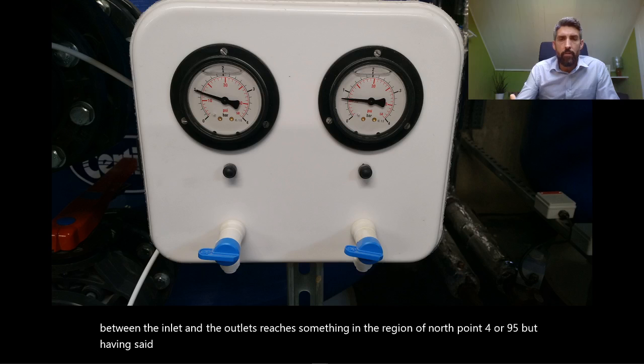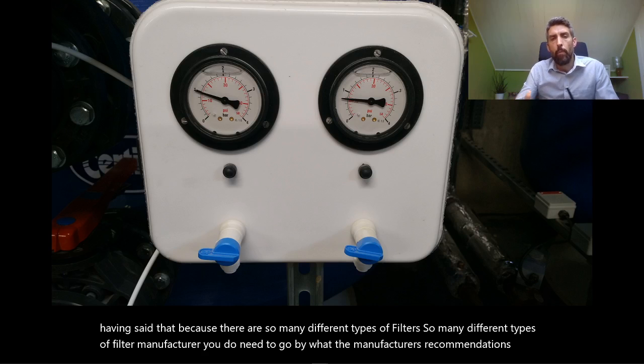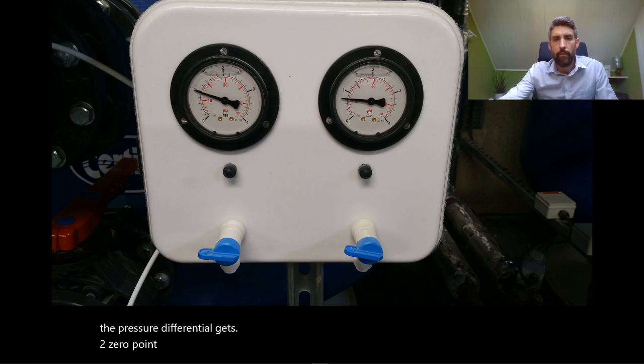Having said that, because there are so many different types of filters and filter manufacturers, you do need to go by what the manufacturer's recommendations are. But a general ballpark figure for commercial swimming pool filters is to backwash when the pressure differential gets to within the 0.4 to 0.5 range.